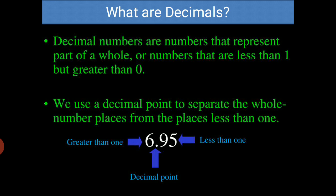Next, what are decimals? Decimal numbers are numbers that represent a part of the whole, or numbers that are less than 1 but greater than 0. We use a decimal point to separate the whole place from the place less than 1. For example, the number is 6 decimal 95. Here 6 is before the decimal point, it is greater than 1, and 95 is after the decimal point, then it is less than 1.